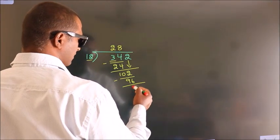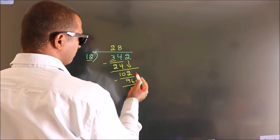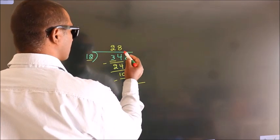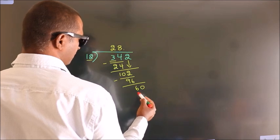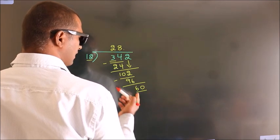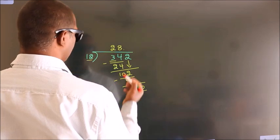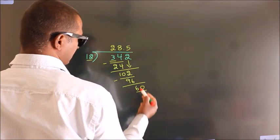After this, no more numbers to bring down. So what we do is we put a dot and take 0. So 60. When do we get 60? In the 12 table, 12 times 5 equals 60.